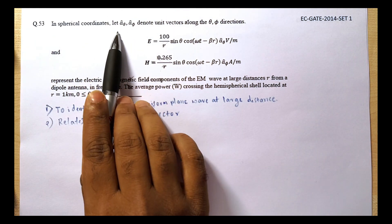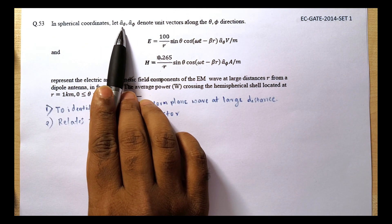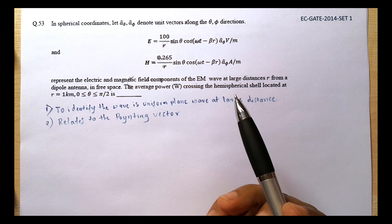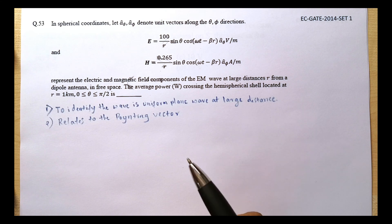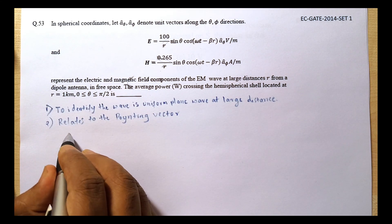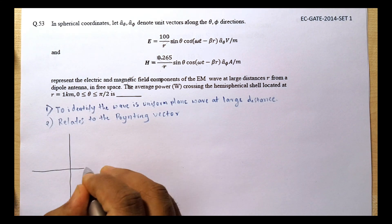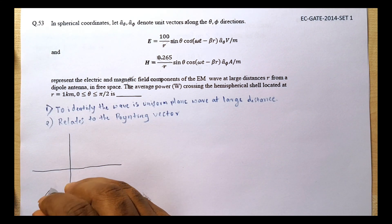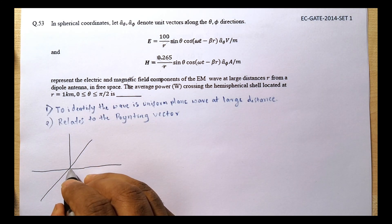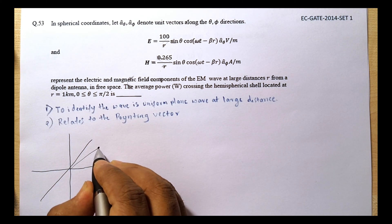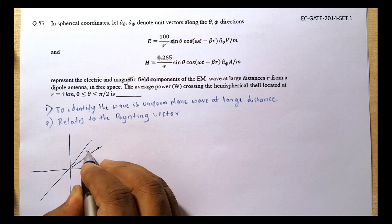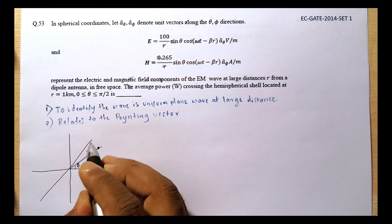Given the parameters â_θ, â_φ, and r, we know this problem is in spherical coordinates. In spherical coordinates, there are three axes defined by three different parameters: first is r, which is the radial length, and then you have θ, which is the elevation angle.